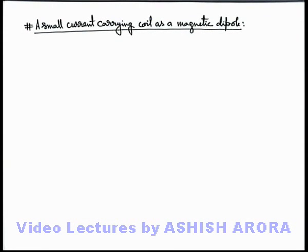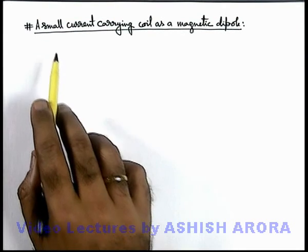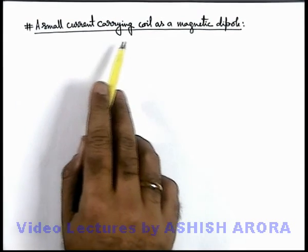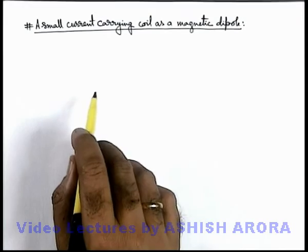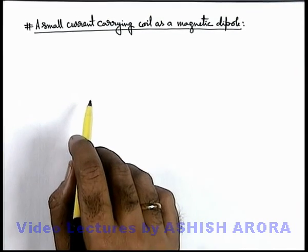Let us now discuss a very important concept in classical magnetism — that is, a small current-carrying coil as a magnetic dipole.